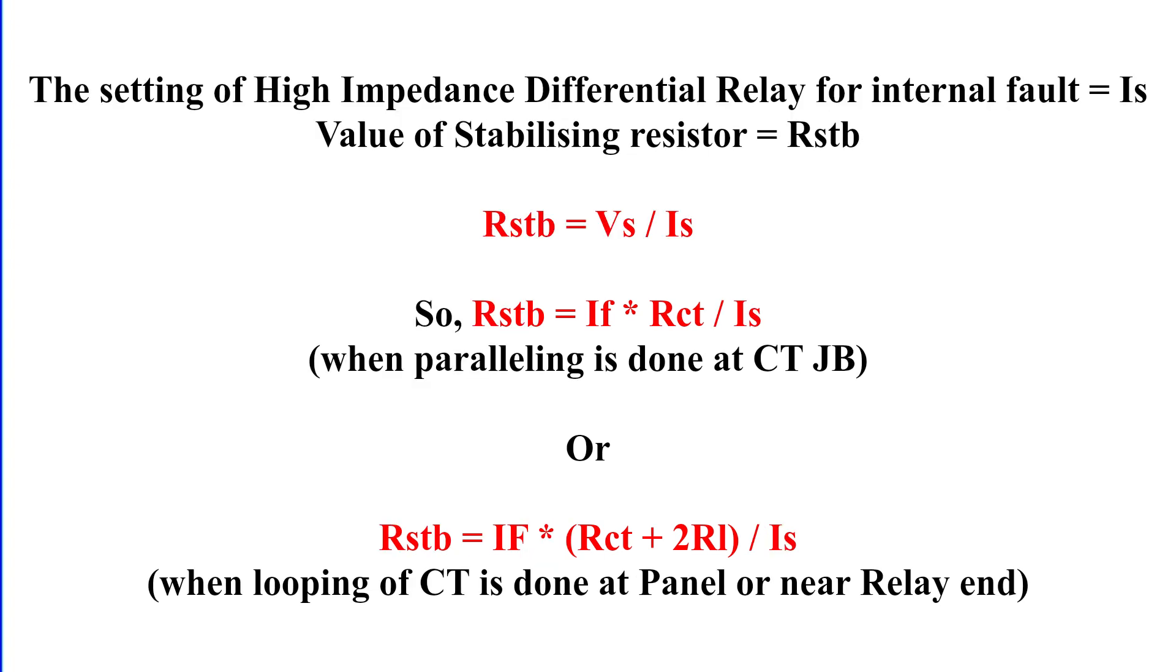Now, let's determine the value of the stabilizing resistor. The relay has a set current value, IS, for internal faults. To prevent false operation during through faults, the voltage across the CT should not drive a current greater than IS through the relay. Thus, we place a stabilizing resistor, RSTB, in series with the relay coil. The value of RSTB is calculated as RSTB equals Vs divided by IS.